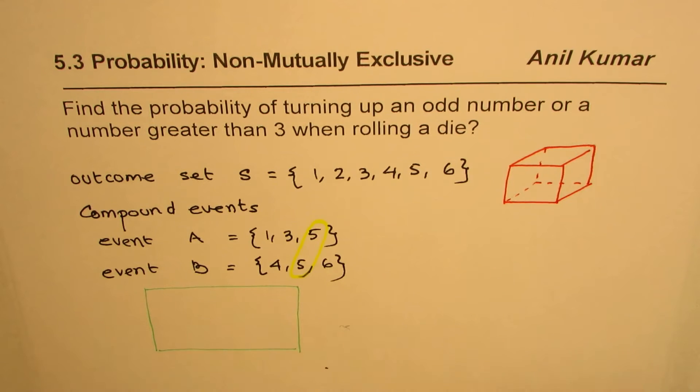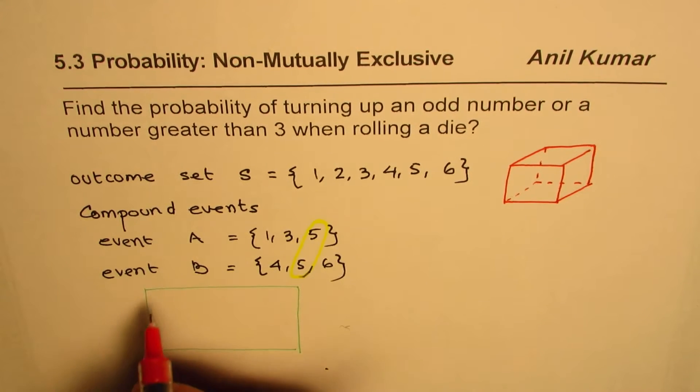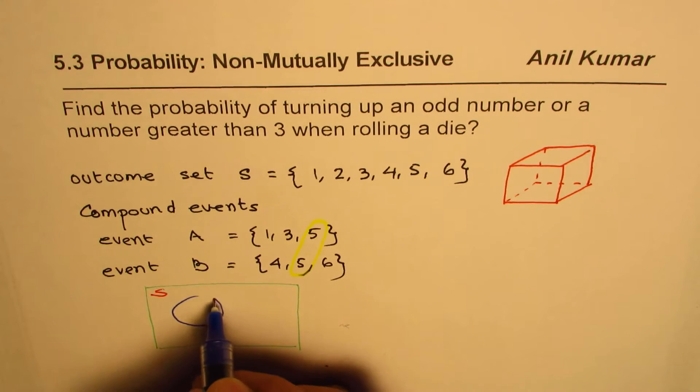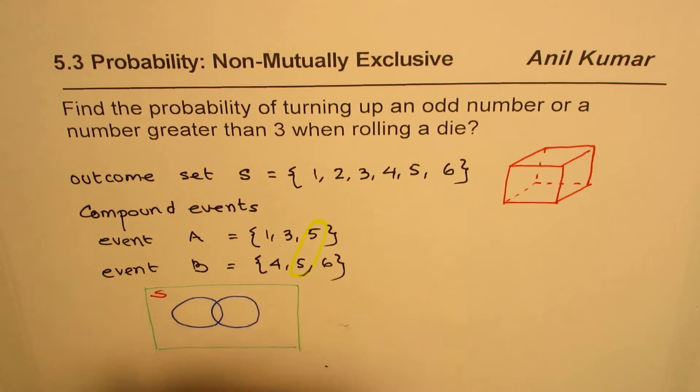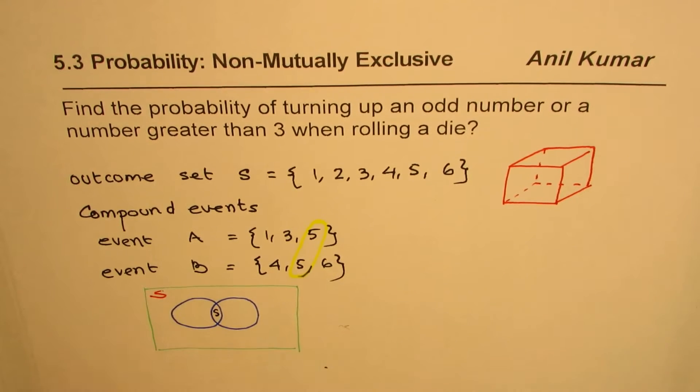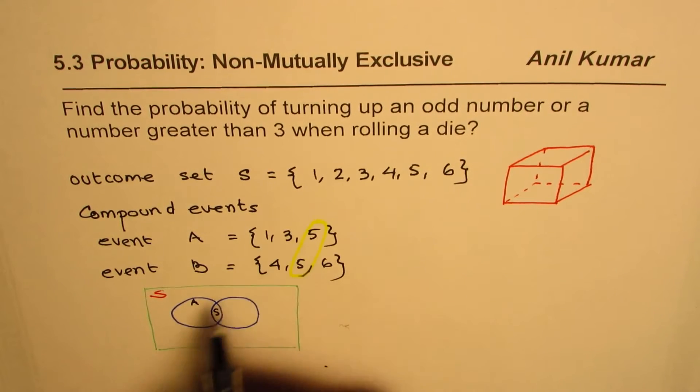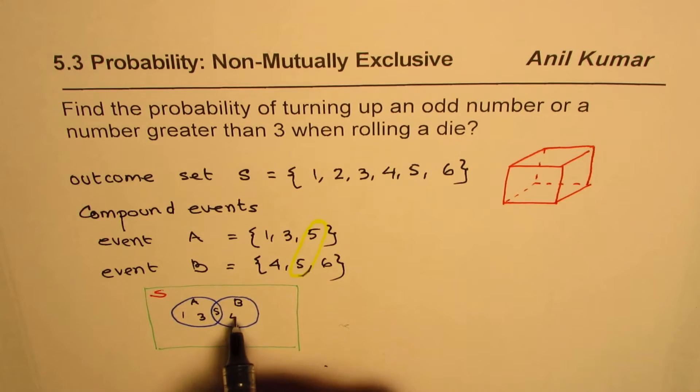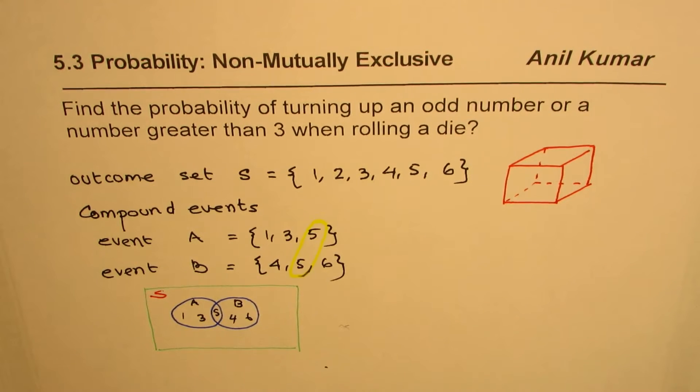So if we have the sample set S in this sample set, event A and event B could be written like this, where we find that 5 is common between these two events. So that means event A for us has value 1 and 3 apart from 5, right? And event B has 4 and 6 as the values apart from 5, right? And the value like 2 will be outside.